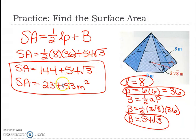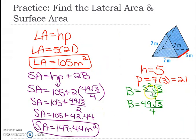This part equals 144. Adding 144 and 54 radical 3 on the calculator gives approximately 237.53 square meters. Note: the area of a regular hexagon and the area of an equilateral triangle are not on your formula sheet, so you have to remember them.